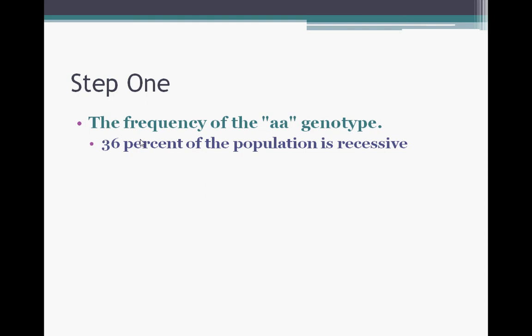So step one, the frequency of the little a, little a genotype. They gave you this in the prompt because 36% of the population is recessive. If 36% of the population is recessive, the decimal form of that is 0.36. Look, the first part is already solved.